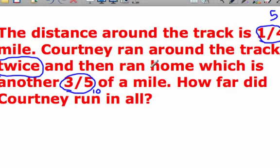How far did Courtney run in all? Well, if she ran around the track twice, we could do two times the distance around the track, which is five. And then we could add that with the ten miles that she ran to get home. So this would equal ten, and we'd add the ten miles that she took to get home, and that would equal twenty.